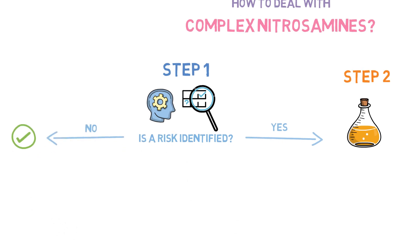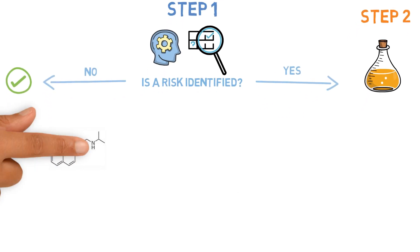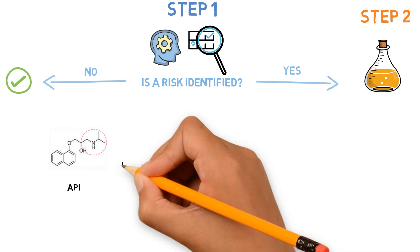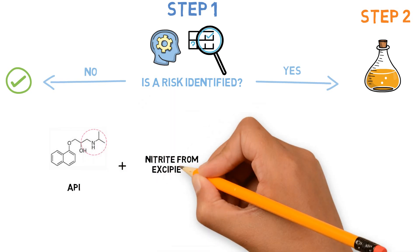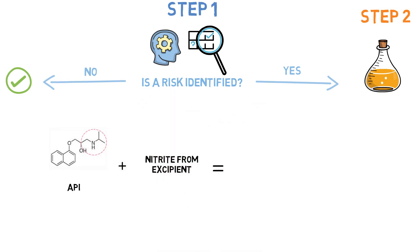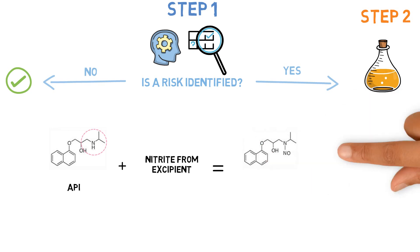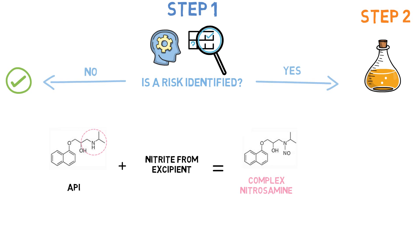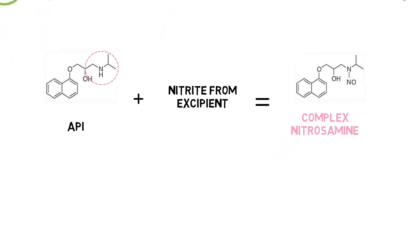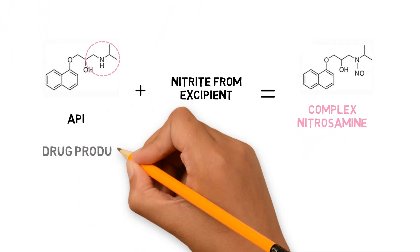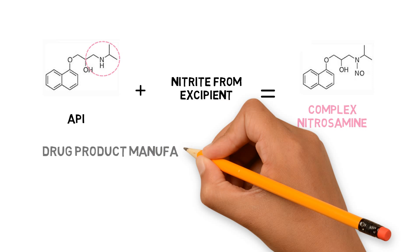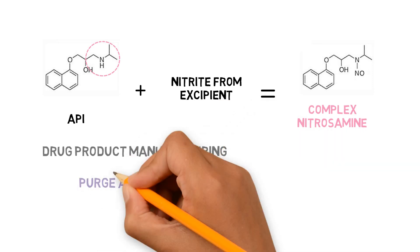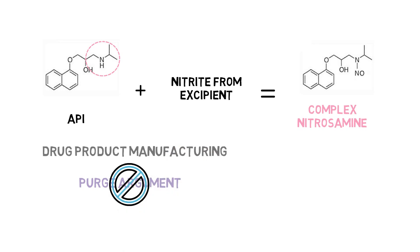Let's say your API is a secondary amine and you have identified a potential risk for nitrite contamination in one of the excipients used in the formulation. There might be the possibility that the API amine is nitrosated, generating its corresponding nitrosamine. Since such a nitrosamine would be formed during the drug product manufacturing, we cannot justify its elimination through a purge argument.